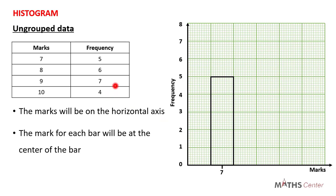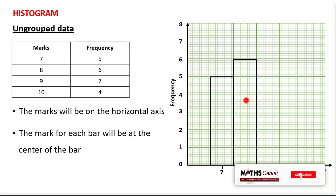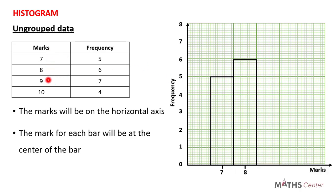Moving to mark 8 with frequency 6 — on a histogram we don't leave spaces between bars, so the next bar is drawn attached to the first one, with height at 6. The mark 8 is placed at the center of this bar. For ungrouped data, the width of all bars is the same — each occupies 10 minor divisions. Next is mark 9 with frequency 7, drawn attached to the previous bar, with height at 7 and mark 9 at the center.